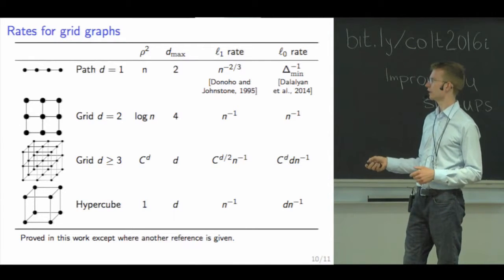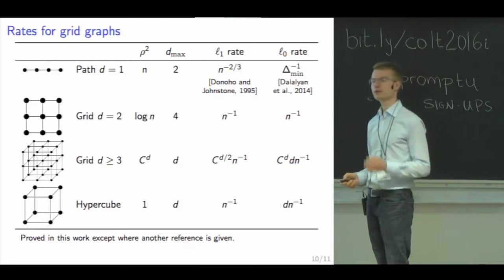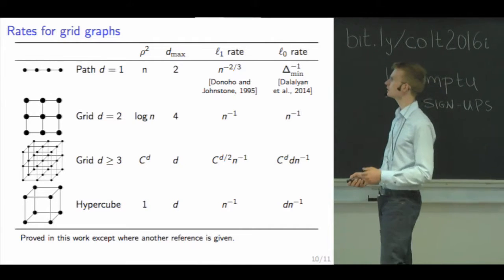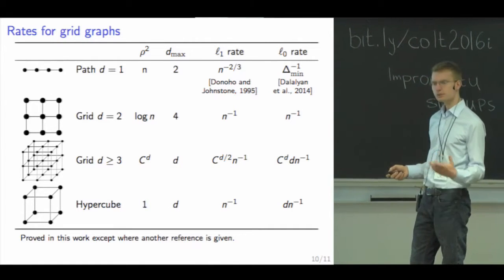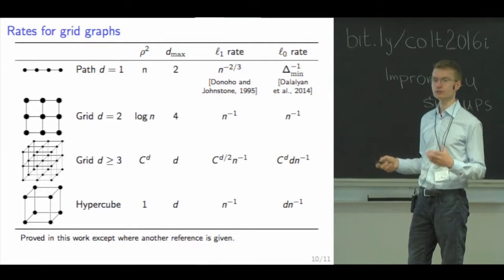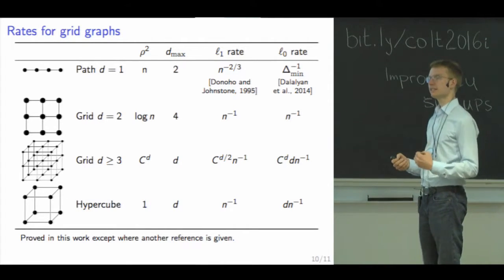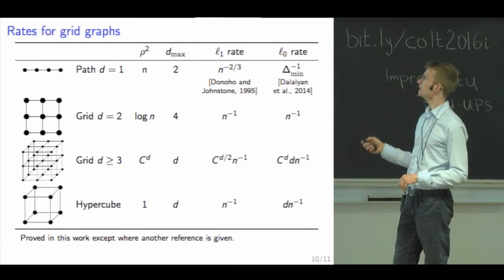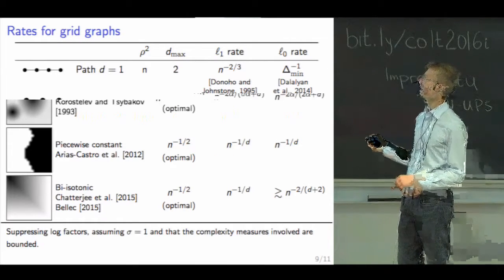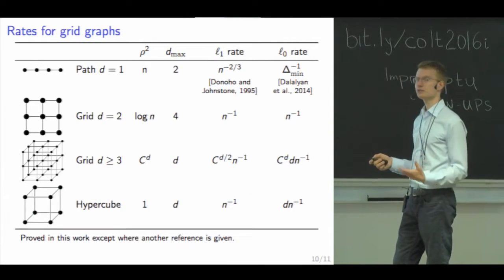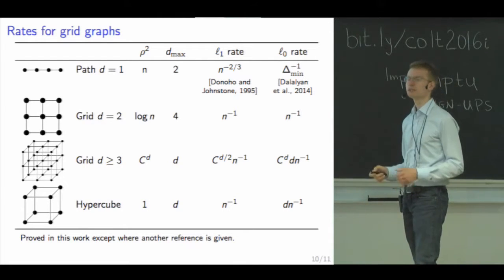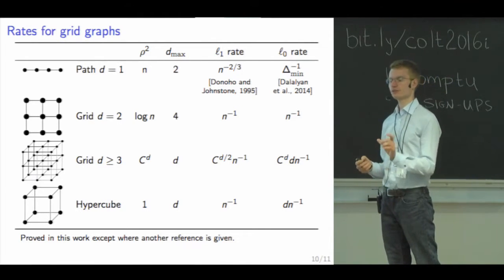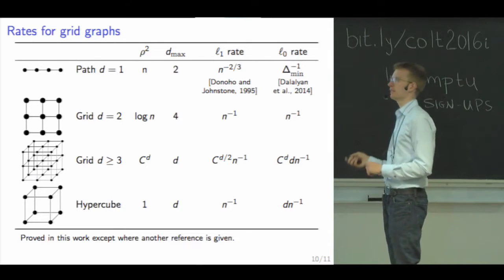For high-dimensional grids we can bound rho by a constant, but it grows exponentially with dimension in our analysis. In contrast, the 1D path graph analysis is much more intricate. The L1 rate there is n to the minus two-thirds, and a lot of work went into finding a good L0 rate, which was found by Dalalyan, Hebiri, and Lederer in terms of the minimum spacing of the patches of constant signal in the ground truth.